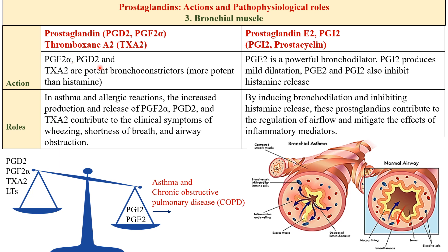PGD2 and thromboxane A2 contribute to inflammation and bronchoconstriction. PGD2 is released during allergic reactions and promotes smooth muscle contraction in the bronchi, contributing to airway constriction. Thromboxane A2, synthesized by platelets and involved in platelet aggregation and vasoconstriction, further intensifies bronchoconstriction. On the other hand, prostaglandin E2 and I2 have bronchodilatory and vasodilatory effects: PGE2 inhibits smooth muscle contraction in the bronchi and promotes airway dilation, while prostacyclin (PGI2) induces vasodilation and inhibits platelet aggregation, opposing the vasoconstrictive effects of thromboxane A2.